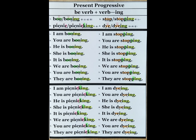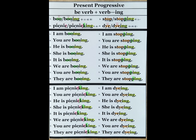Number 2: if the end of the verb is a hard C, we can't just add I-N-G — we need to add a K and then add I-N-G. For example, picnic — picnicking. I am picnicking. You are picnicking. He is picnicking. She is picnicking. It is picnicking. We are picnicking. You are picnicking. They are picnicking.